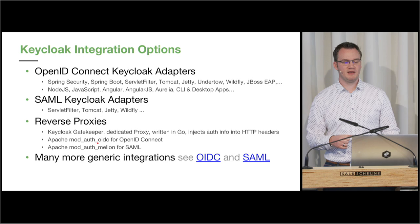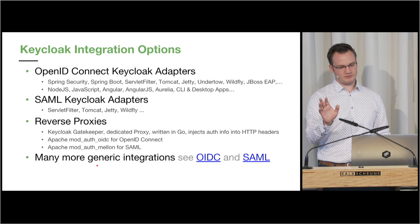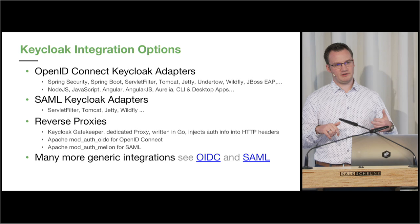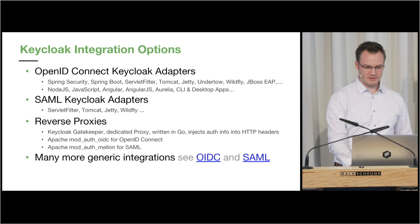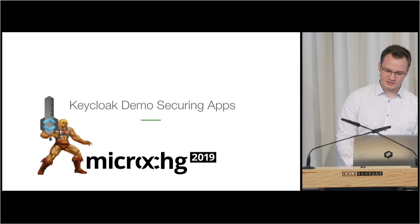Now I want to secure my application with Keycloak, and there are several options. Keycloak provides out-of-the-box adapters, which are technology-specific integrations — many around Java, but also available for Node.js or plain JavaScript — that provide out-of-the-box support for OpenID Connect and SAML, including Keycloak-specific information like roles and permissions. There are also reverse proxy options like the Go-based Keycloak Gatekeeper, which performs all protocol interaction and injects authentication information via HTTP headers to downstream applications. Apache modules like mod_auth_oidc or mod_auth_mellon for SAML are also options. Basically, everything supporting OpenID Connect or SAML can work with Keycloak.